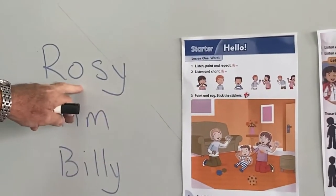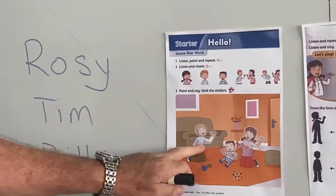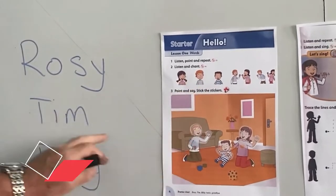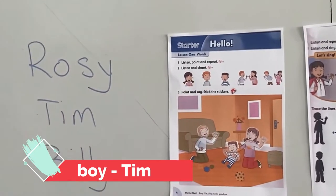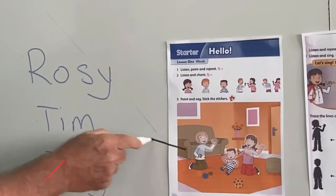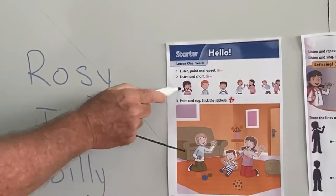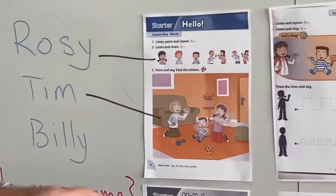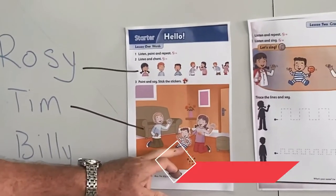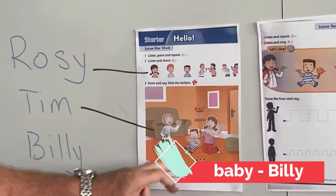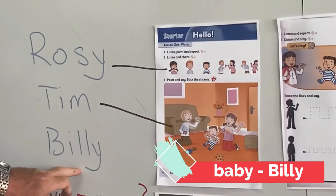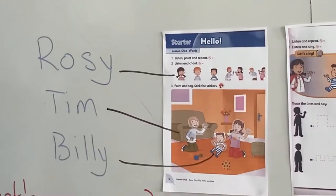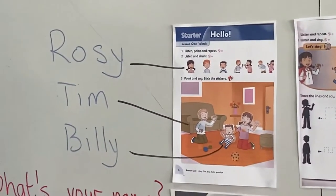The girl — her name is Rosie. Rosie. The boy — his name is Tim. Let's draw a line. That's Tim. That's Rosie. And the baby, the little boy here, is called Billy. Let's draw a line. That's Billy.